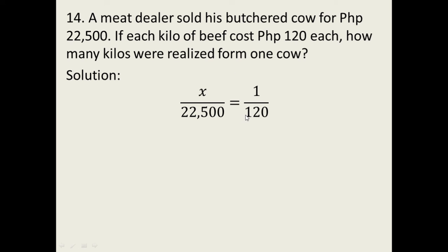How many kilos were realized from one cow? We can do here cross multiplication. So this will become 120X is equal to 22,500. And then divide both sides by 1 over 120. So our value of X, which is our number of kilos of the whole cow, is 187.5 kilograms. So that is the number of kilos the one cow has. That's it. Thank you.